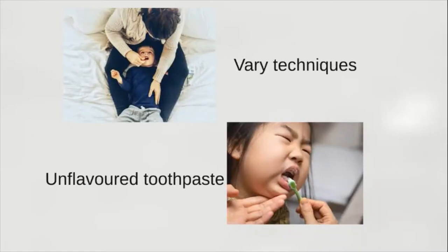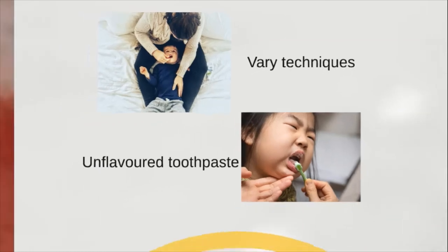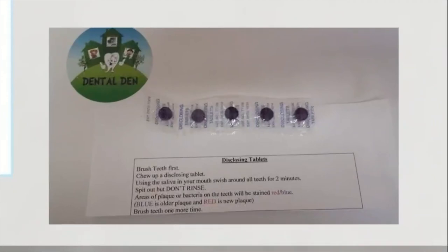Not all children like having their teeth brushed. One technique shown here has the toddler lying down between the caregiver's legs. Some children may not like the taste of toothpaste — for example, a child with sensory needs might find it too spicy. You can get unflavoured or mild-flavoured toothpaste — speak to your chemist or healthcare provider about those brands. For disclosing tablets: brush teeth first, chew up the tablet, swish with natural saliva for two minutes, spit but don't rinse — pink or blue/red staining will reveal areas of plaque to target.